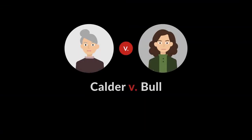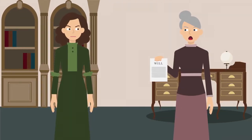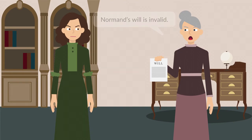The United States Supreme Court first addressed this issue in 1798 in Calder v. Bull. Abigail Bull was the beneficiary of Norman Morrison's will. After Morrison died, Janet Calder claimed that the will was invalid and that she was entitled to Morrison's estate under Connecticut's law of intestate succession.